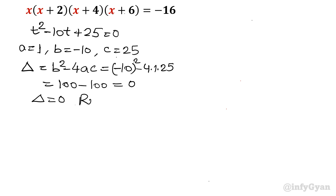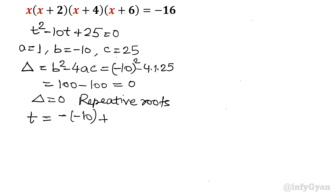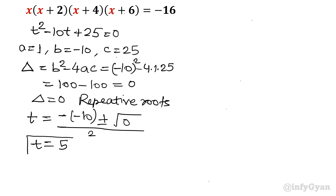Discriminant is 0, which means repetitive roots — real of course. So t equals minus b over 2a, which is 10 over 2, so t equals 5. Substituting back, since t was y², we get y² equal to 5, meaning y equals plus or minus root 5.